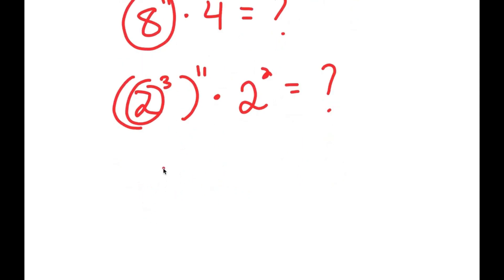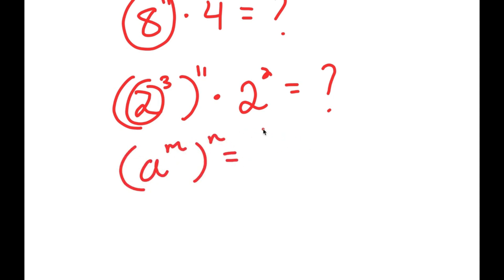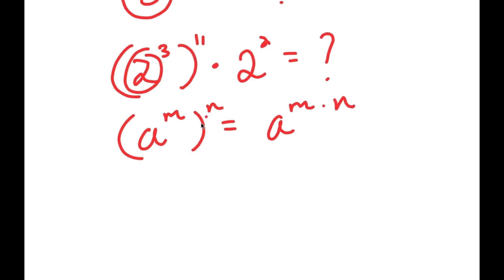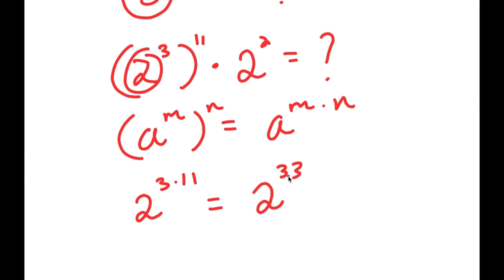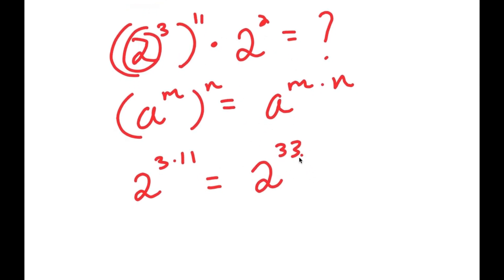If I have something in the form a to the power of m to the power of n, this is equal to a to the power of m times n. So 2 to the power of 3 to the power of 11 equals 2 to the power of 3 times 11, which is equal to 2 to the power of 33, because 3 times 11 is 33.